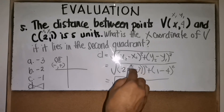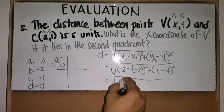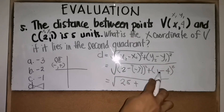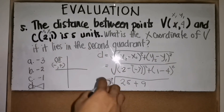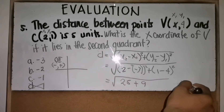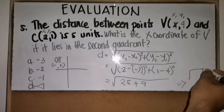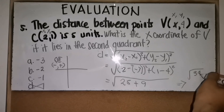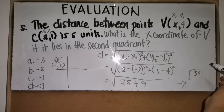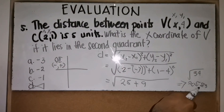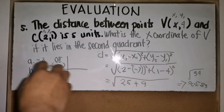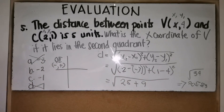Computing: 2 - (-3) = 5, so 5² = 25. Then 1 - 4 = -3, and (-3)² = 9. So d = √(25 + 9) = √34 ≈ 5.83. Since 5.83 ≠ 5, x = -3 is incorrect.